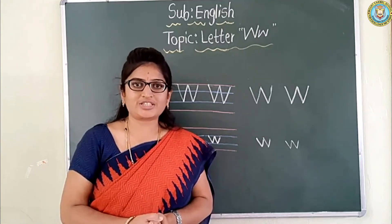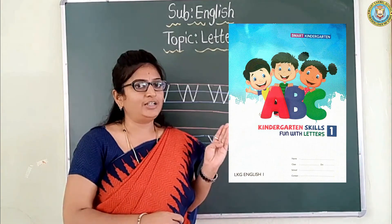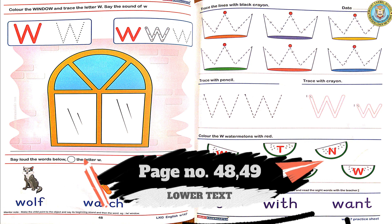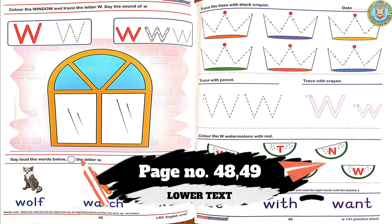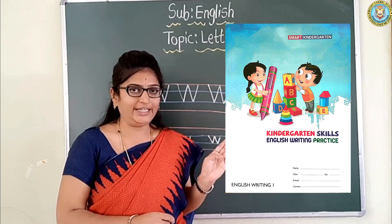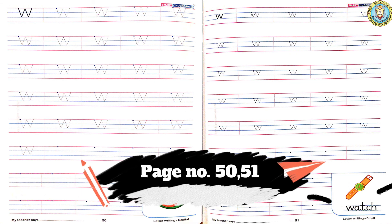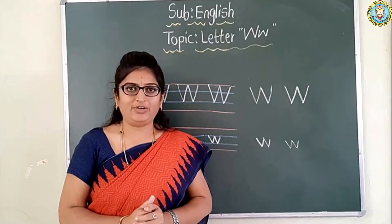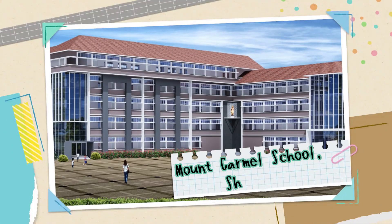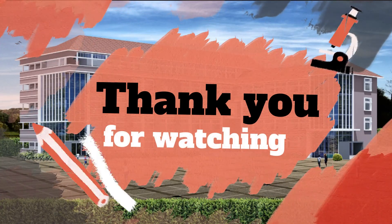Okay, my dear children. Did you watch the video? Now we have finished our activity. Take out your English Kindergarten textbook and open page number 48–49. Complete page number 48–49. Also open your Kindergarten English writing textbook to page number 50–51. Complete page number 50–51. Write neatly. I hope you will enjoy this activity. Thank you.